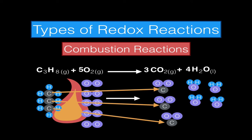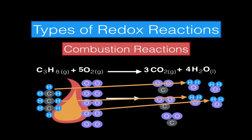The carbons that were once part of that carbon chain are now part of the carbon dioxides. The hydrogens that were part of that carbon chain have now rearranged and attached themselves to oxygen. So the carbons and hydrogens will react with the oxygen and combine with that oxygen to make a new product — in this case, carbon dioxide and water.